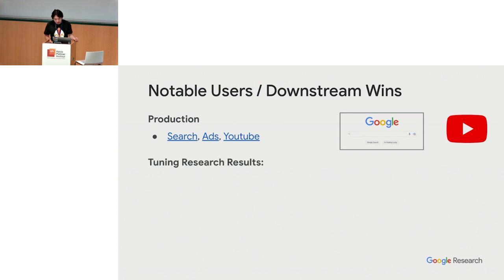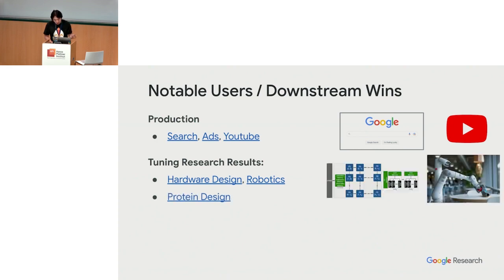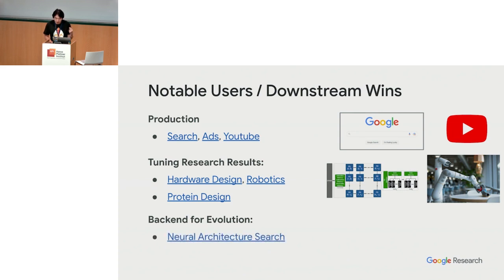Vizier has also tuned research results such as hardware design, robotics, and protein design. It's also been used as a back-end for other people's optimization algorithms — you're not forced to use any of Vizier's algorithms. For example, the early neural architecture search papers used Vizier as a back-end to handle their gigantic GPU runs. It's also been used for AutoML and symbolic algorithm search.